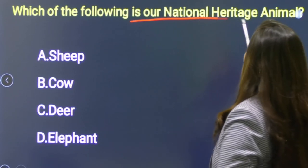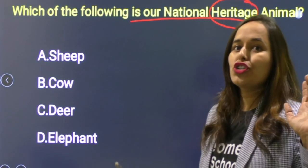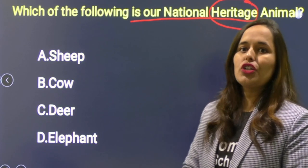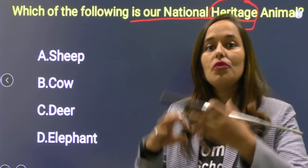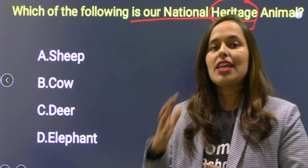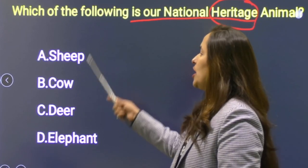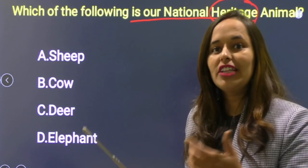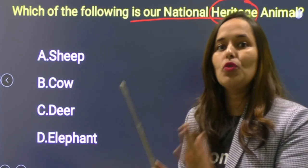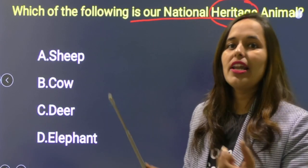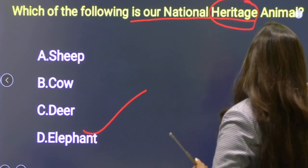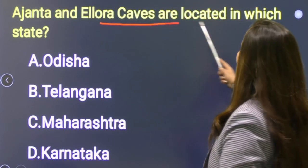Next: Which of the following is our national heritage animal? National animal नहीं — national heritage animal पूछा है। हमारे ancestors से विरासत में मिलती heritage — जैसे monuments। Options: sheep, cow, deer, elephant. Lord Ganesha से जुड़ा है, elephant को उसकी power की वज़ह से national heritage animal माना गया है। Option D is correct.